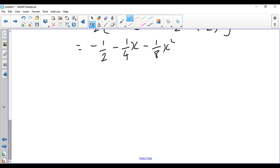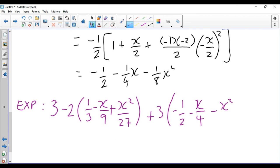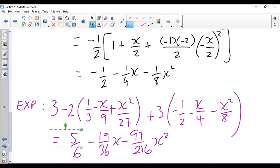Right, let's see if we can put this whole chunk together and get the right answer. So the expansion will be 3 minus 2 lots of a third, minus x over 9, plus x squared over 27. And then I had plus 3 lots of minus a half, minus x over 4, minus x squared over 8. You're just going to have to stick that in your calculator, what is 3 minus 2 thirds, minus 3 over 2, and so on. You get 5 over 6, minus 19 over 36 x, minus 97 over 216 x squared.